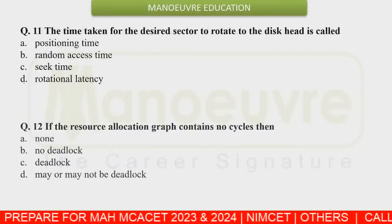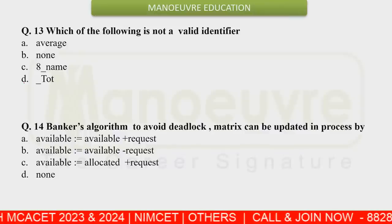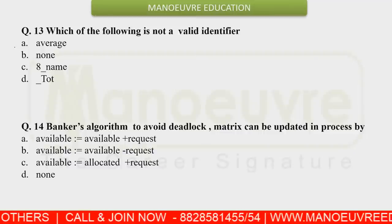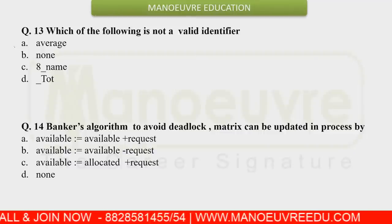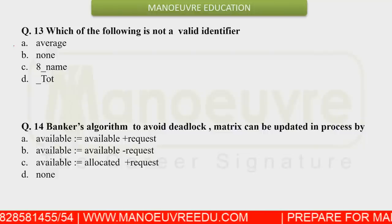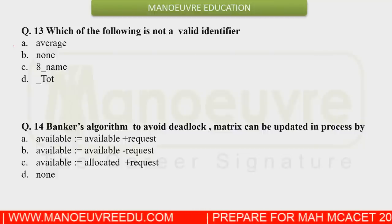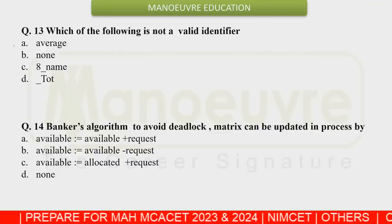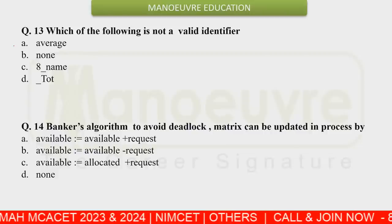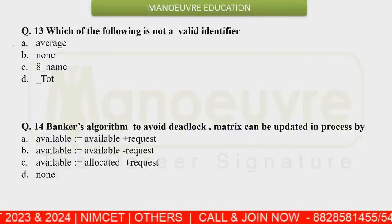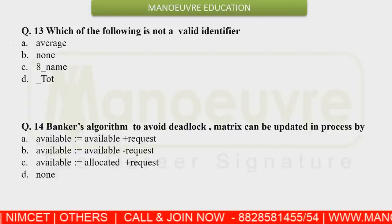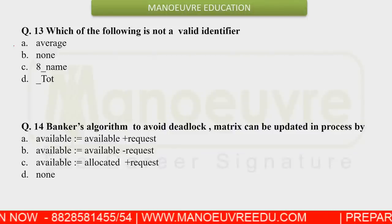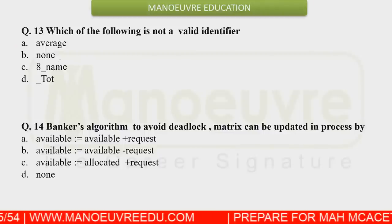Question 12's right answer is option B. Question 13 was a simple question asking which of the given options is a valid identifier name in C. We know that variable names either start with an underscore or a character. Option C starts with a number, so it is an incorrect identifier — option C is wrong.